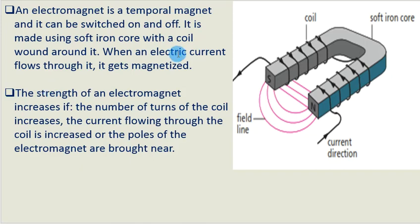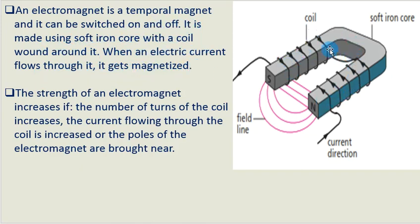I would like to begin by explaining what an electromagnet is. An electromagnet is a temporary magnet, and it can be switched on and off. It is made using a soft iron core with a coil wound around it. When an electric current flows through it, it gets magnetized. An electromagnet is made using a soft iron core because iron can easily be magnetized.